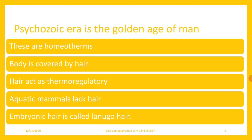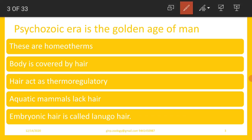Mammals are homeotherms. Because of the presence of hair, hair acts like insulation. Because the entire body is surrounded by hair, the body temperature will not be lost to the surroundings. That means mammals have a thermoregulating mechanism, and as a result their body temperature is always constant. Hence, mammals are called homeotherms.